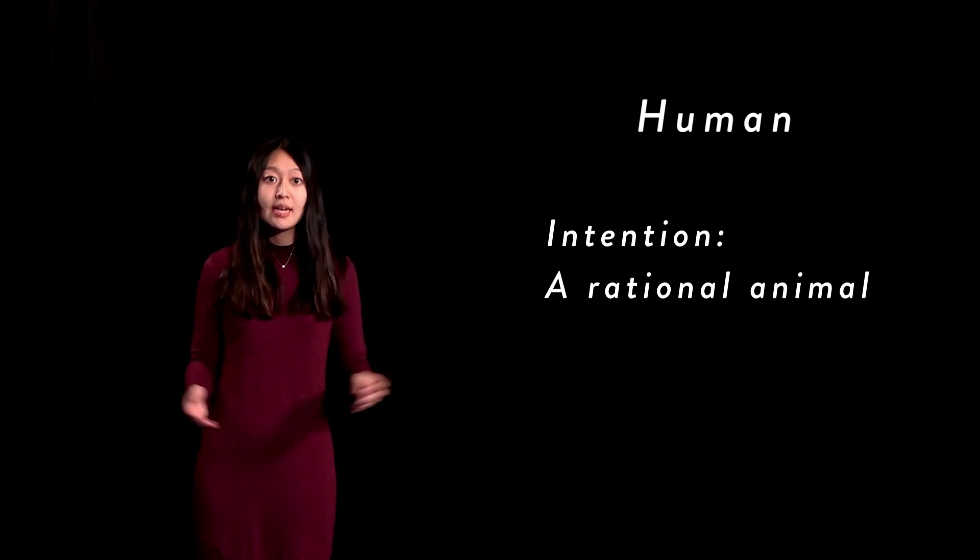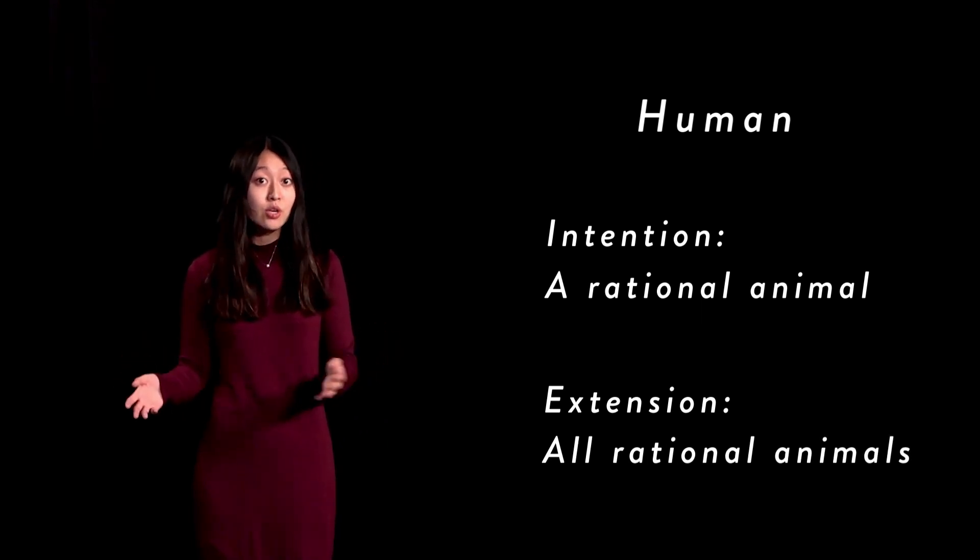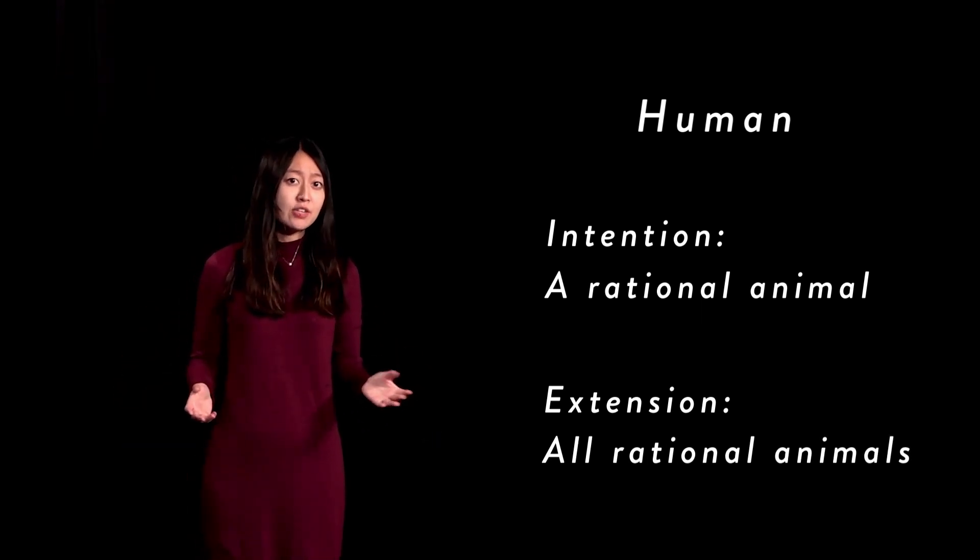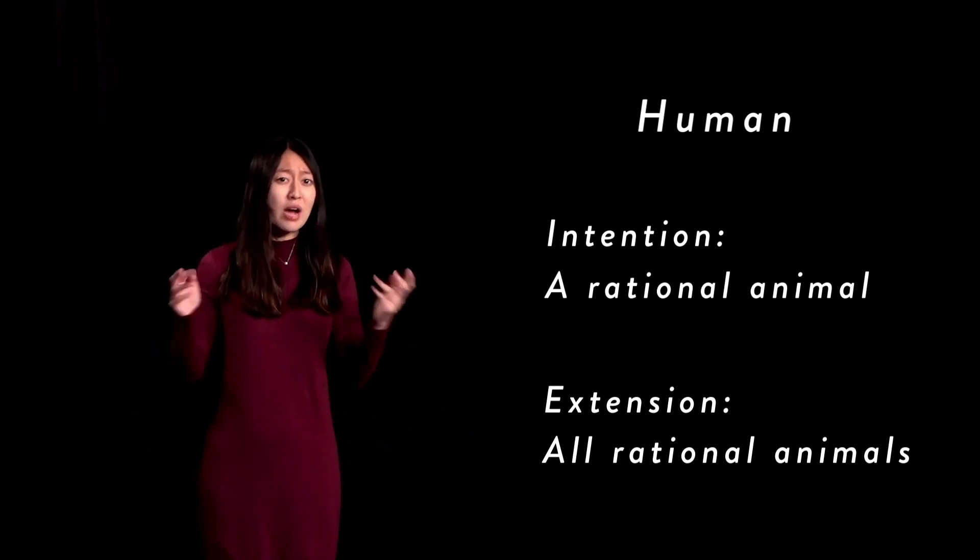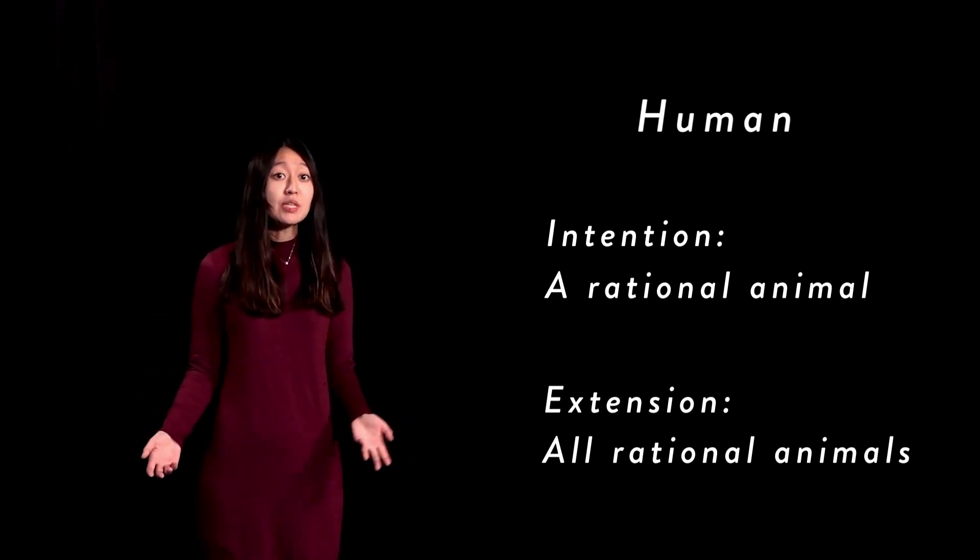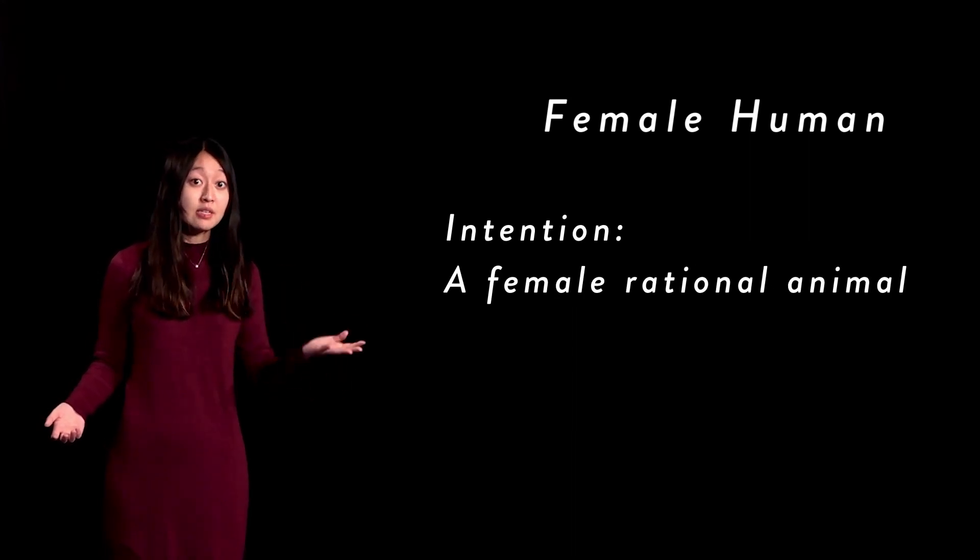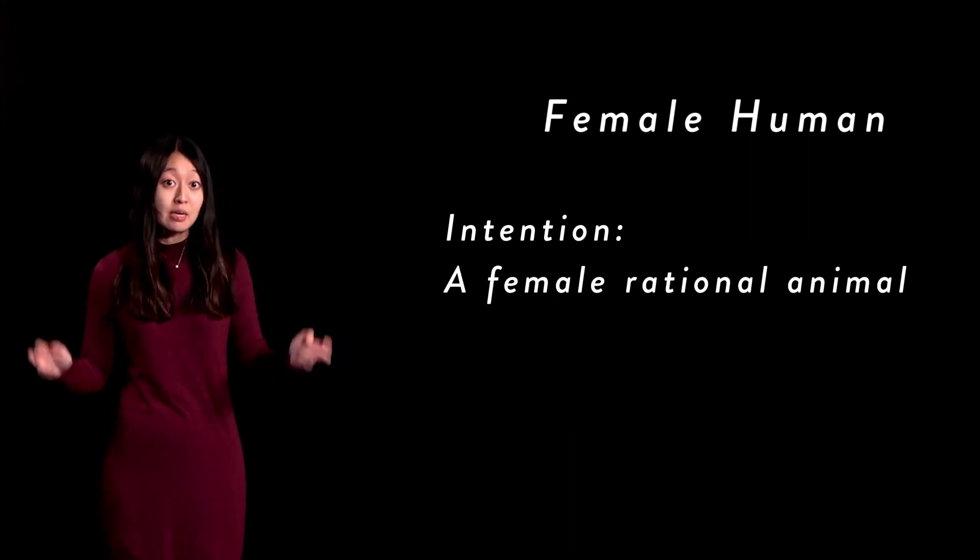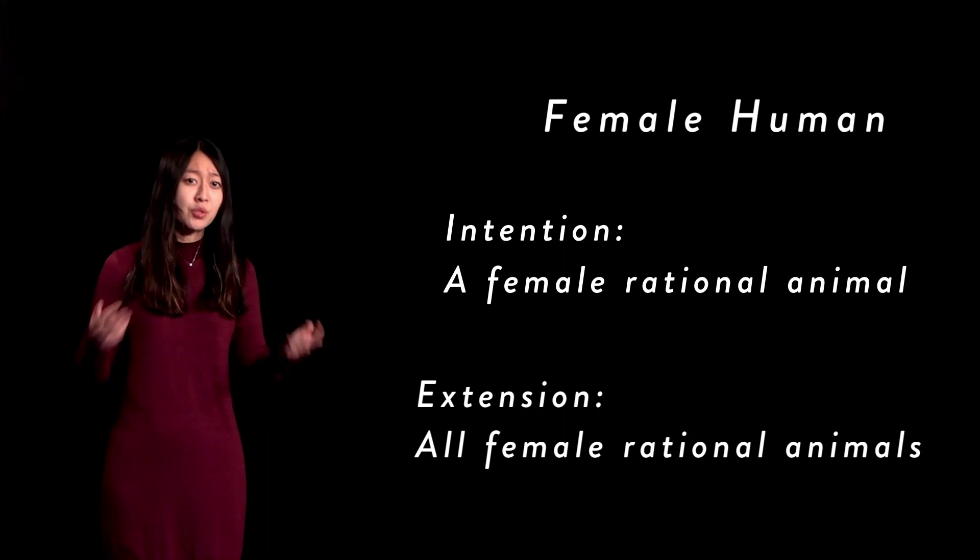Here are some examples where you can see intension and extension at play. First, take the term human. There are many ways to define what it means to be human, but perhaps you agree with Aristotle and define human as a rational animal. This is the intension of the term. The extension of the term is the totality of the rational animals, humans, which exist in reality. We see that we may have made our definition too broad and that there exist other rational animals besides humans. Let's, however, accept the idea that a rational animal is a good definition for human. Let's make the term more specific and see what happens to the extension and intension of the term. Perhaps we choose to specify by using the term female human. Now, the intension of the term increases in terms of specificity since the new meaning of the term is a female rational animal. Conversely, the extension decreases since the number of female humans in reality is fewer than the number of total humans.